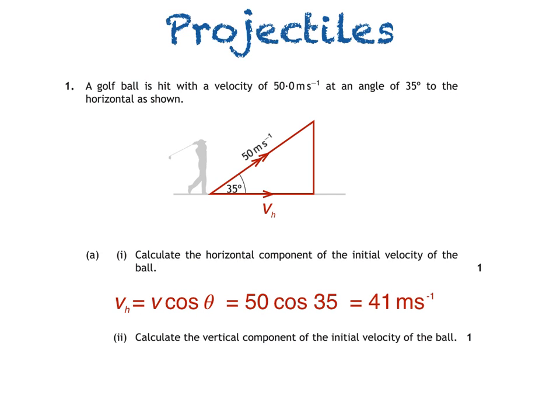The vertical component, which is what we're trying to find in part 2, is the opposite side in our triangle. So we use the sine function. VV is equal to V sin theta, which equals 50 sin 35 equals 29 meters per second.